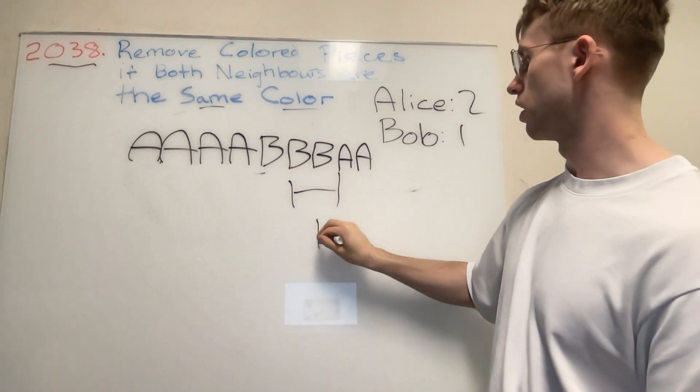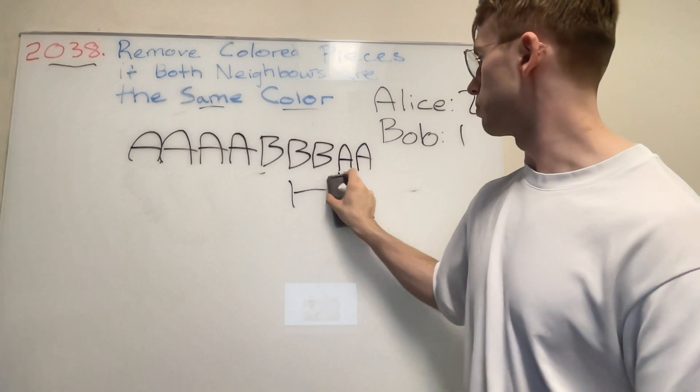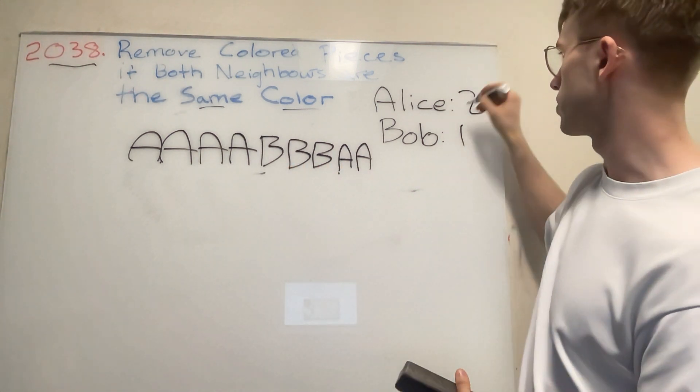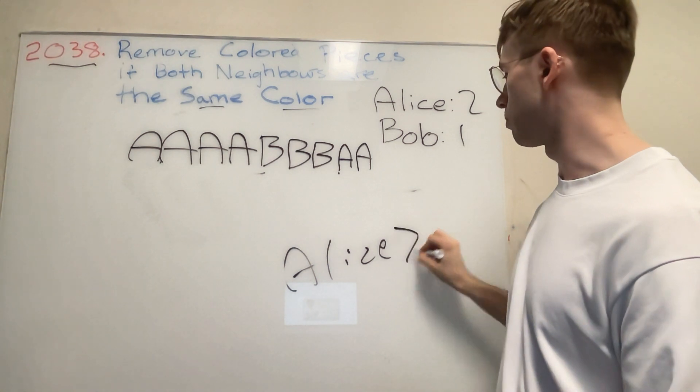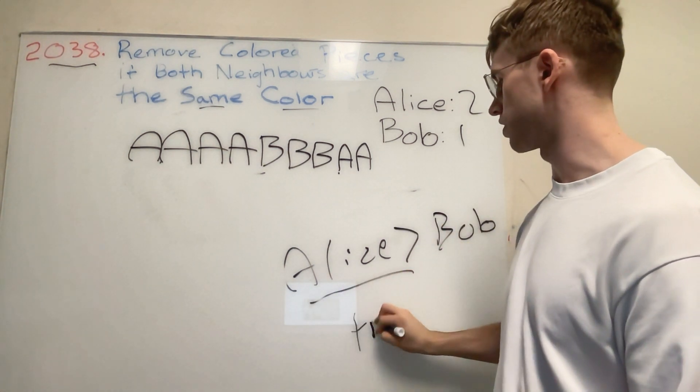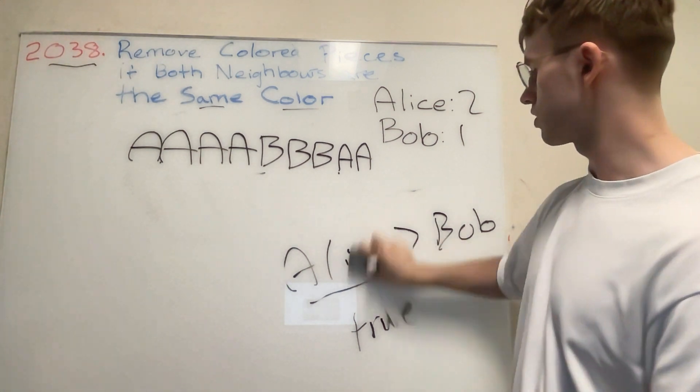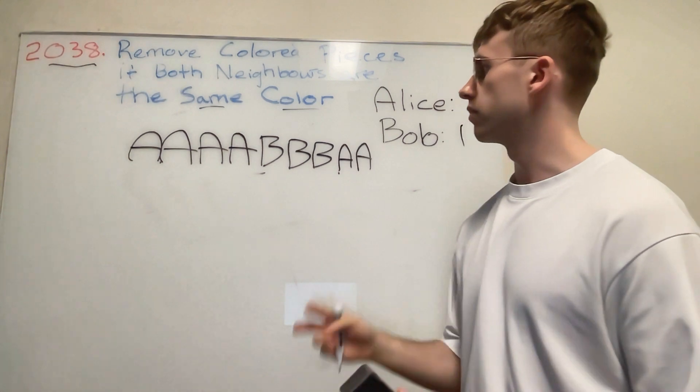Basically it slides along here, no one gets a point, no one gets a point, and then it reaches the end. So what this means is we would say that because Alice has more points than Bob, we would basically return true in this case.